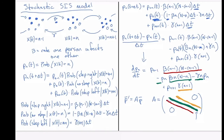We also need an initial condition. A realistic choice is that the probability of there being one person infected at time zero is equal to 1, and the probability of there being k people infected at time zero for k not equal to 1 is zero. In other words, the infection starts with one person getting infected. And that is the Kolmogorov Forward equation for a stochastic SIS model.